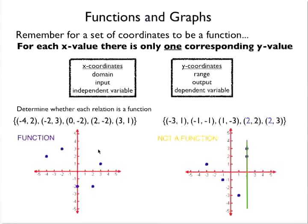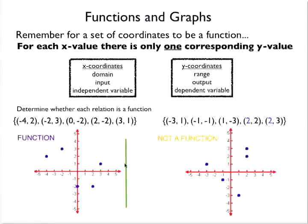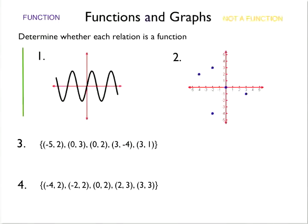You might ask about the y values — in the function example, there were two points with the same y value, like (0, -2) and (2, -2). But the vertical line still only passed through one point at each of those coordinates. We are not looking at whether y values repeat; we are only looking to see if our x values are repeating. The shortcut when we see a list of points is to check whether any points have the same x value.